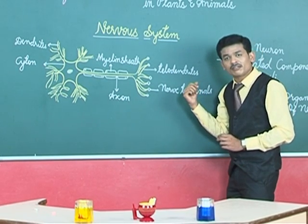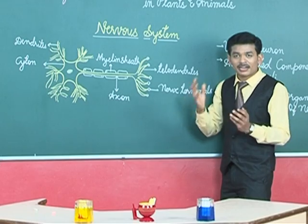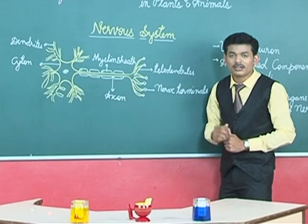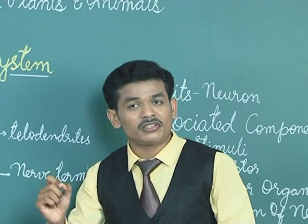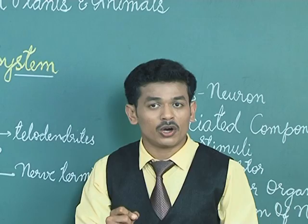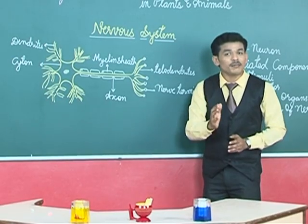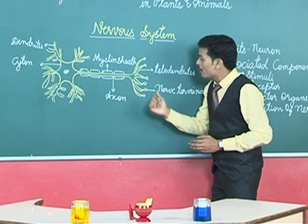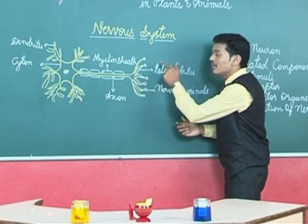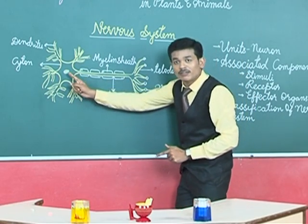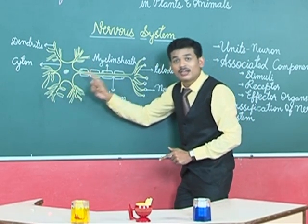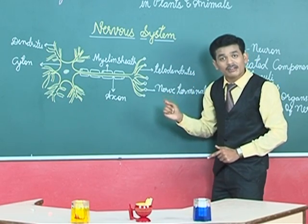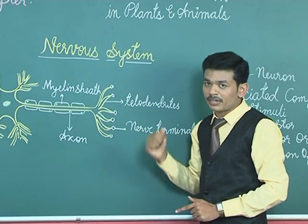Why is it called telodendrites? 'Dendrites' means hair-like structures. The prefix 'tele' means something far away — just like in television, telescope, or telephone. Because the dendrites, the hair-like projections, are present far away from the cyton or cell body, they are called telodendrites. This means the dendrites are present far away from the cyton.